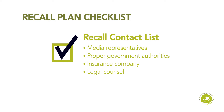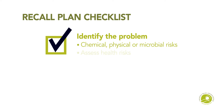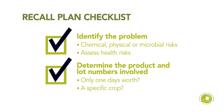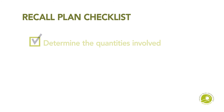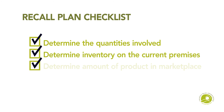Your plan should include identifying the problem — whether it's a chemical, physical, or microbial risk — and assessing the resulting health risks. It should cover determining the products and lot numbers involved: is it only one day's worth of all vegetables, or is it a specific crop? And determining the quantities involved, including the current inventory on premises and the amount of product in the marketplace.